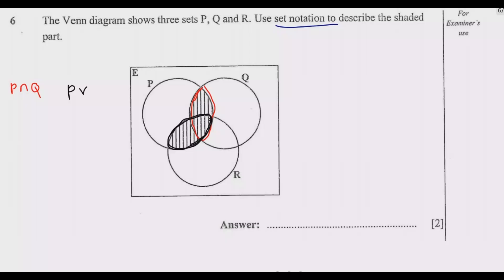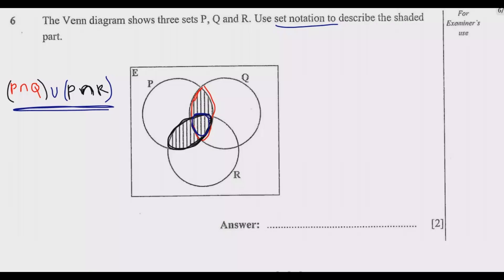We then combine these two sets using union. Remember, when finding the union of two sets, repeated elements are only picked once. So combining them, you end up with: P intersection Q, union, P intersection R.